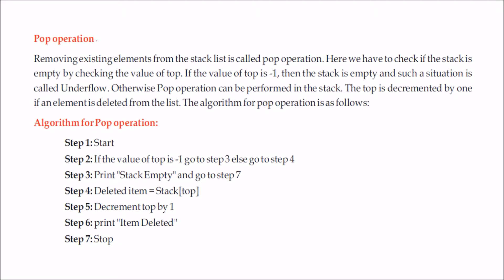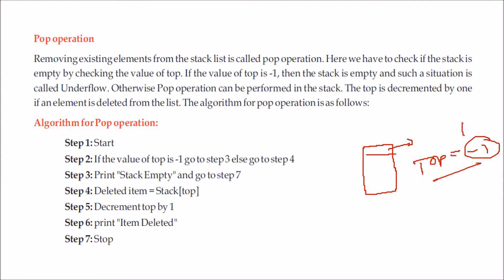The pop operation is the removal or deletion of an element from the top of the stack. You can only remove an element from the top. The first situation that may arise is that there is no element — top is pointing to minus 1. If you want to delete, you first have to check whether top equals minus 1. If it is minus 1, the stack is empty and you will not be able to remove any element.